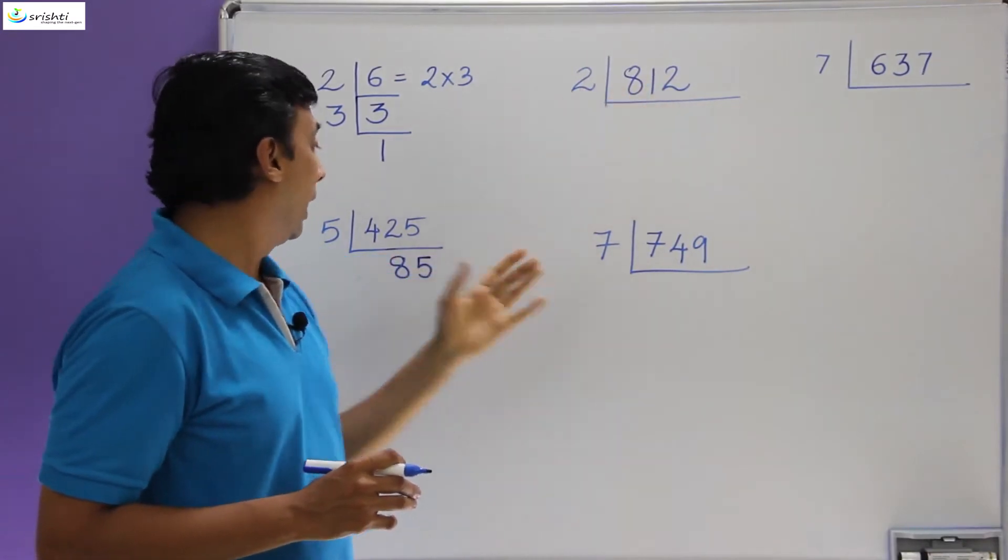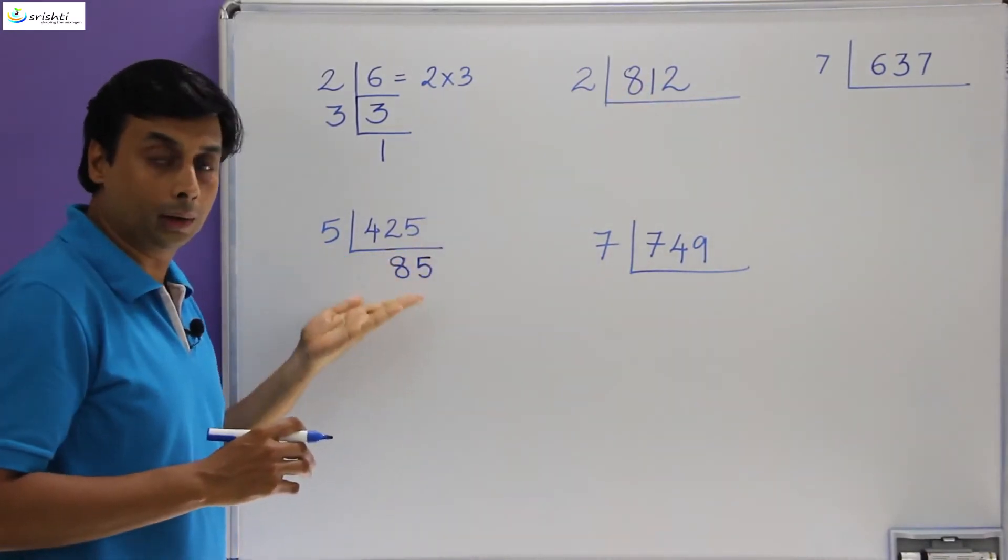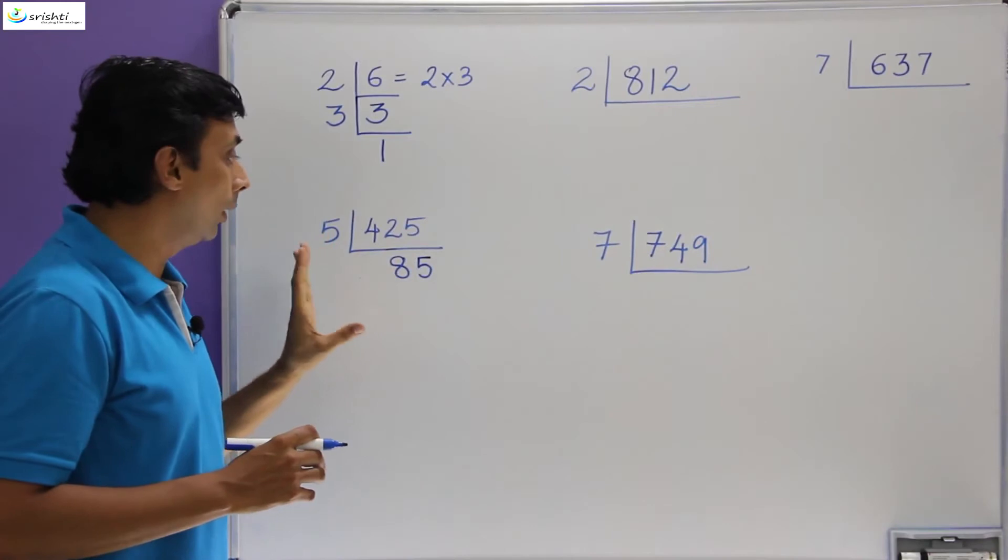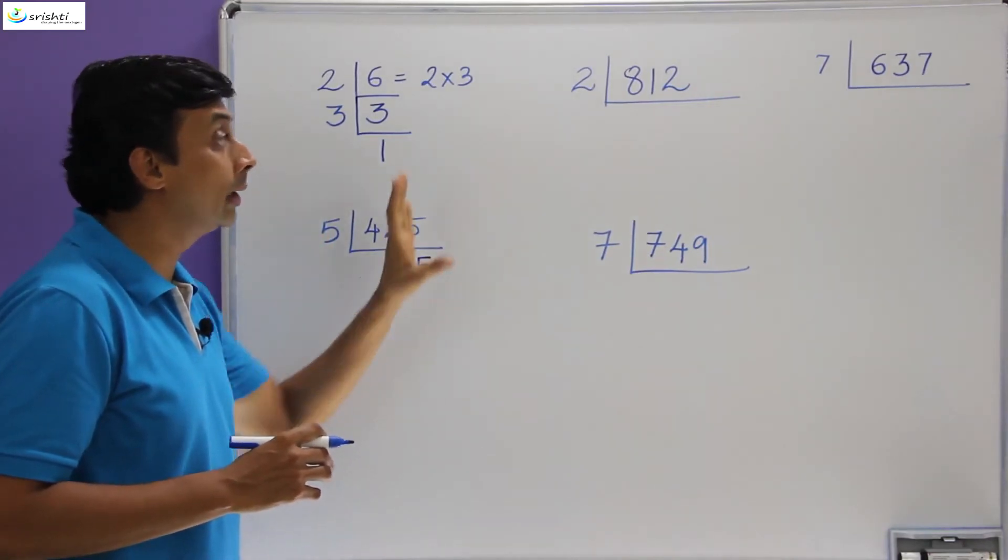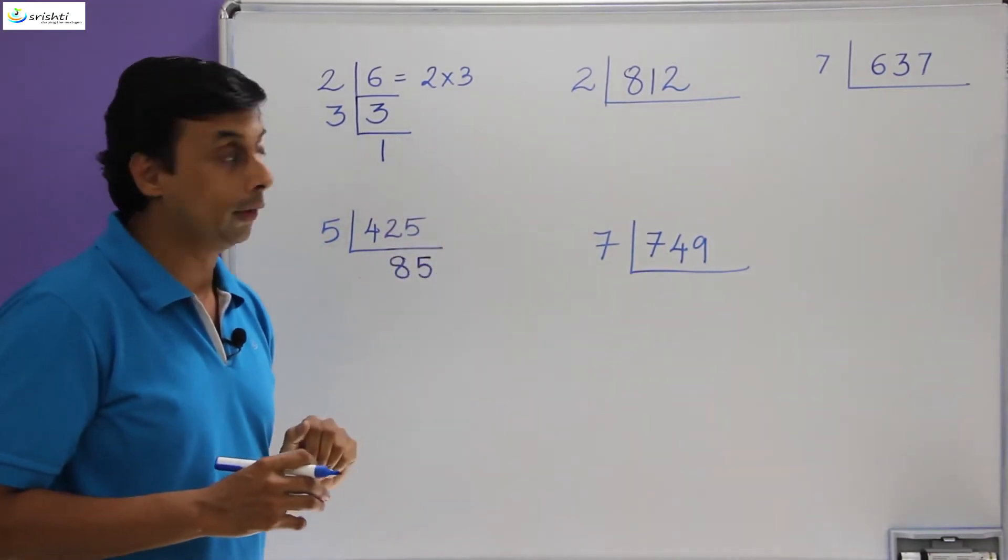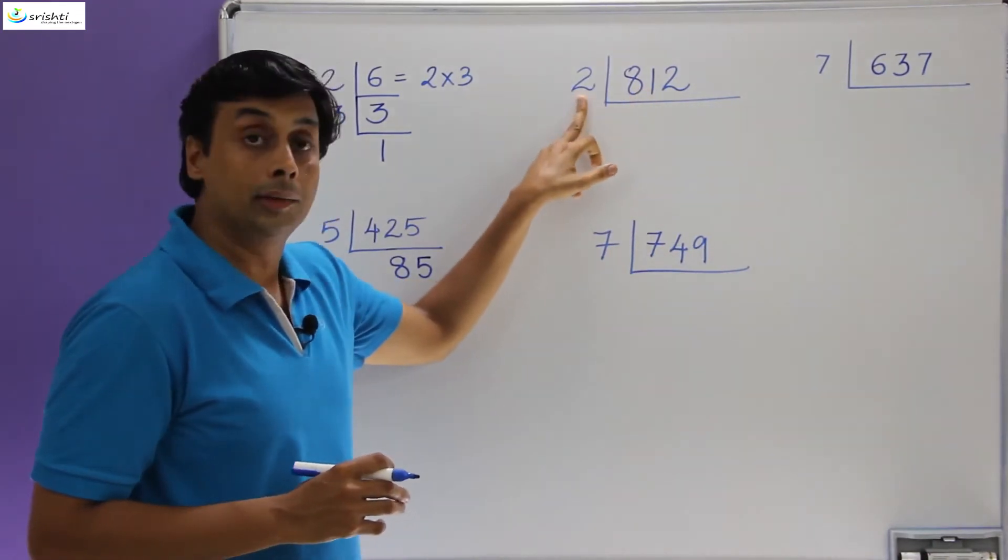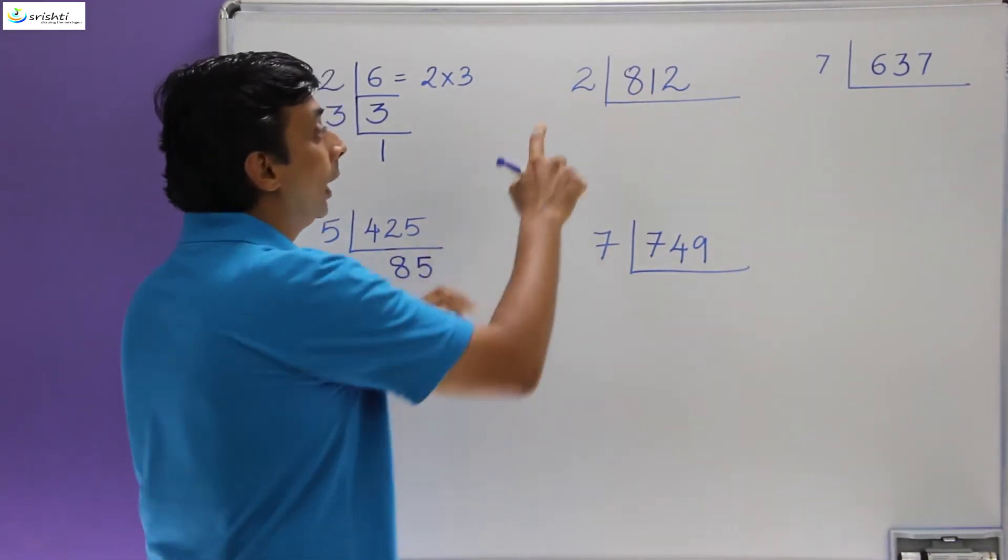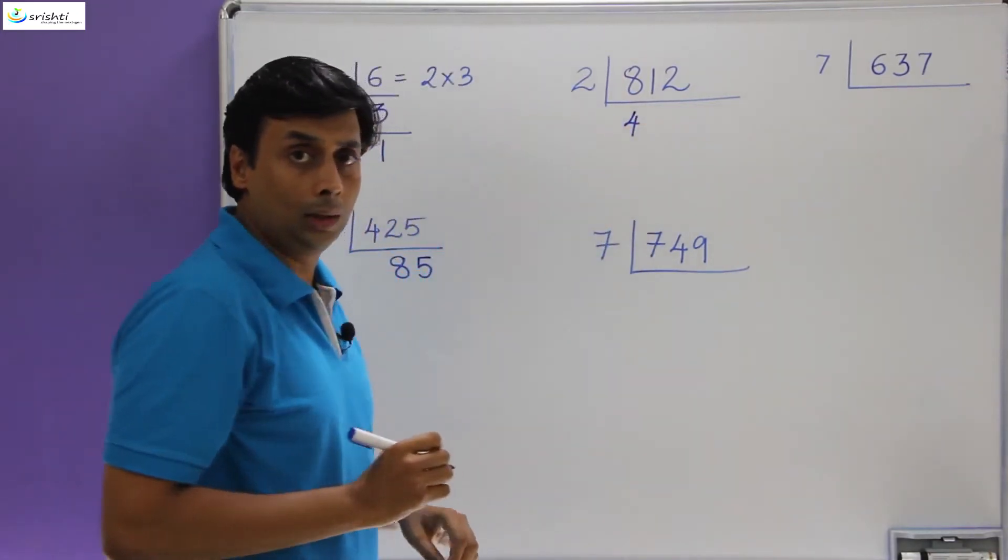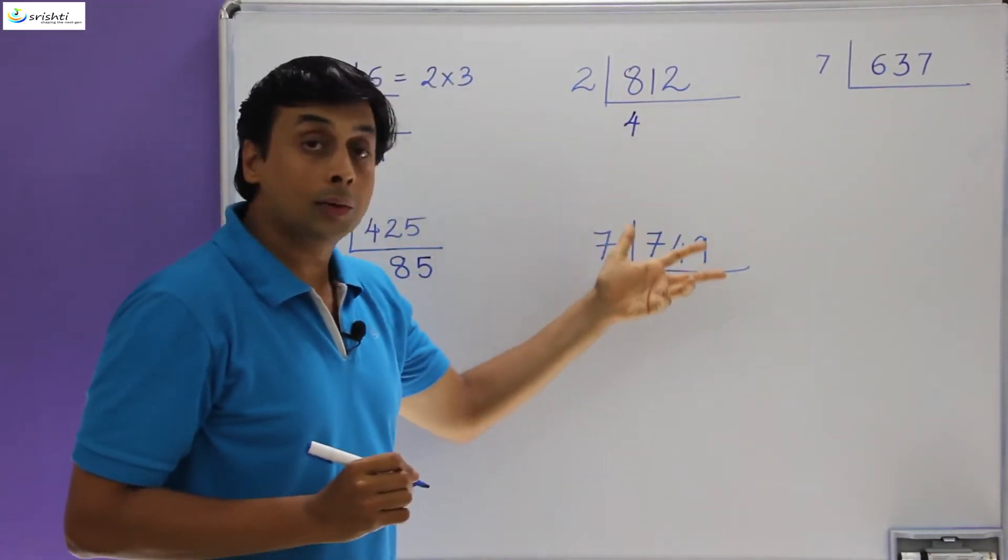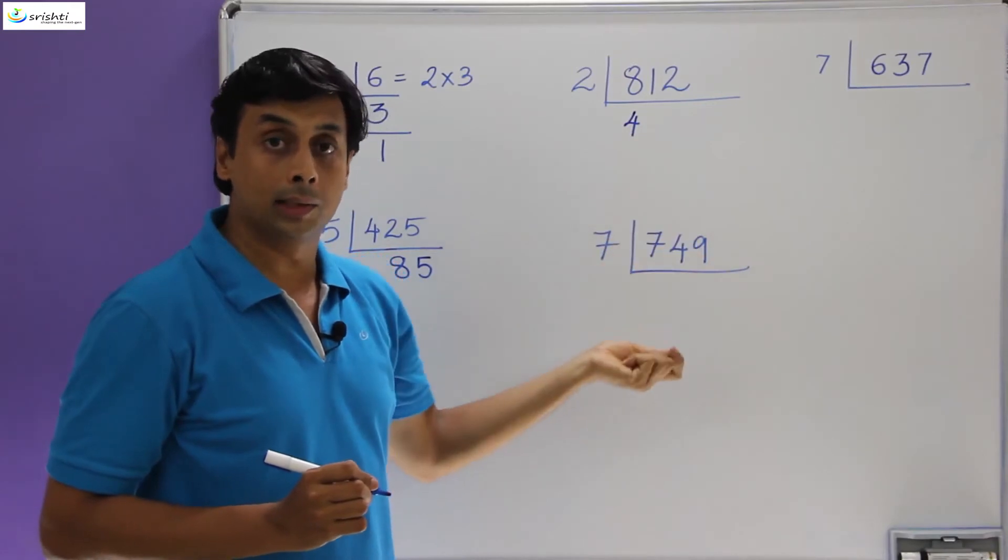Now let's take 812. You can continue this further. You can further divide this by 5, but right now what I'm trying to show you is the mistake that students perform. So now let's take 812. It is definitely divisible by 2, so we know that 2 fours are 8. And now what the students do—so this is the source of the mistake.